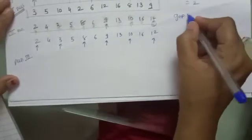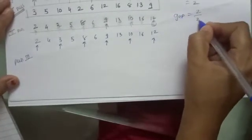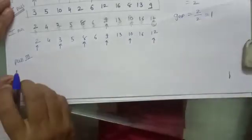Now in pass 3, again gap is equal to 2 divided by 2, which is equal to 1. So now you have to perform insertion sort on this, simple insertion sort. See the one which we have already discussed. So let us perform insertion sort.